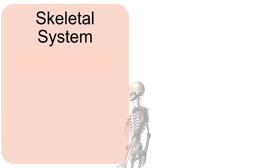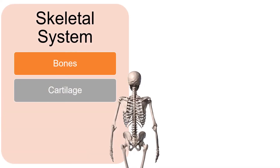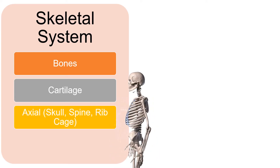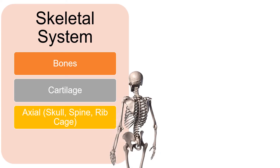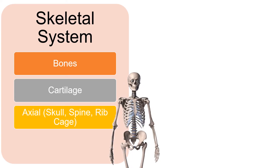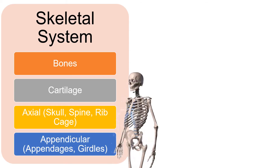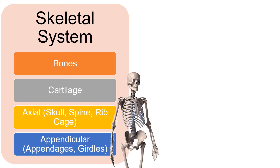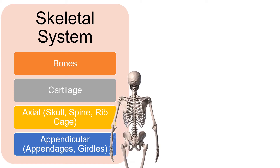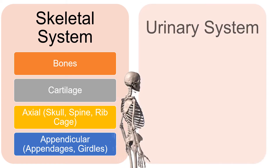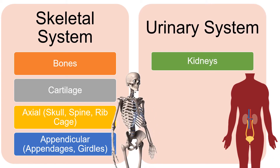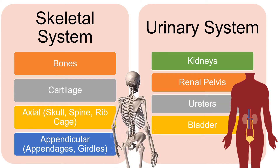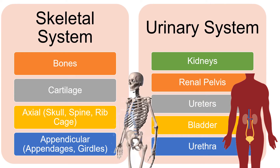Bones, cartilage, and ligaments — divided into axial and appendicular — compose the skeletal system. Axial components include the skull, spine, and ribcage, while appendicular components include appendages and girdles. The urinary system is composed of the kidneys, renal pelvis, ureters, bladder, and urethra.